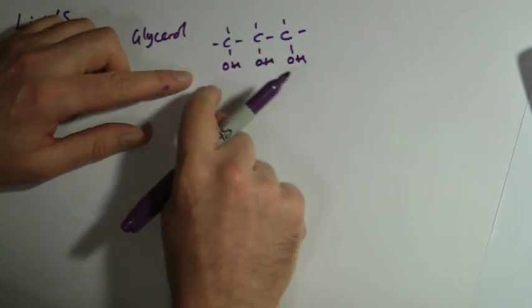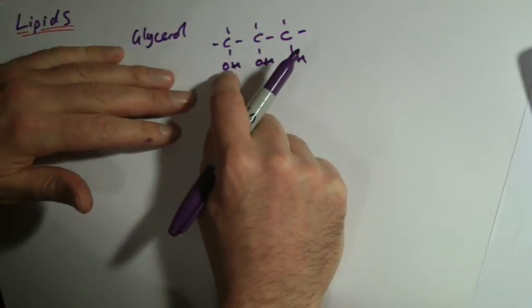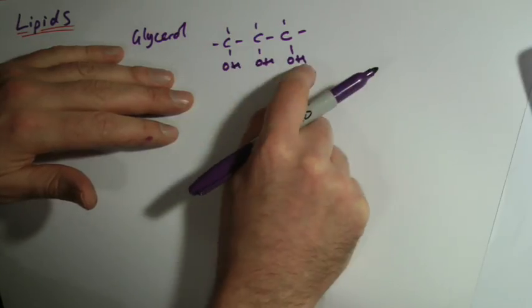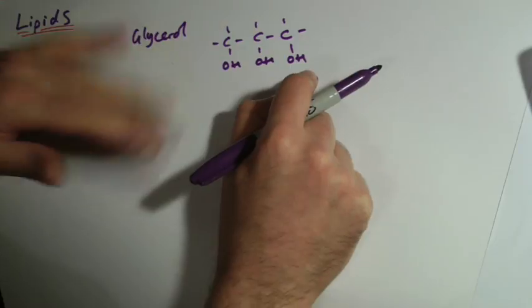It's a pretty useful structure because it means we can start sticking things on. Again, if you've watched the glucose structure video, look for OH groups on these molecules. That's where things are going to be bonding on to.